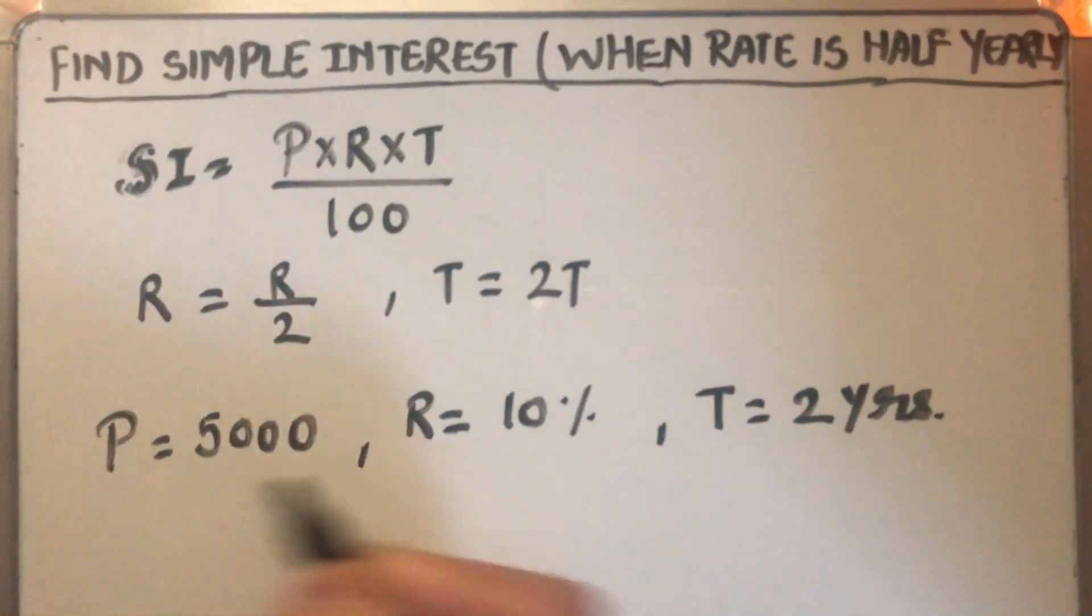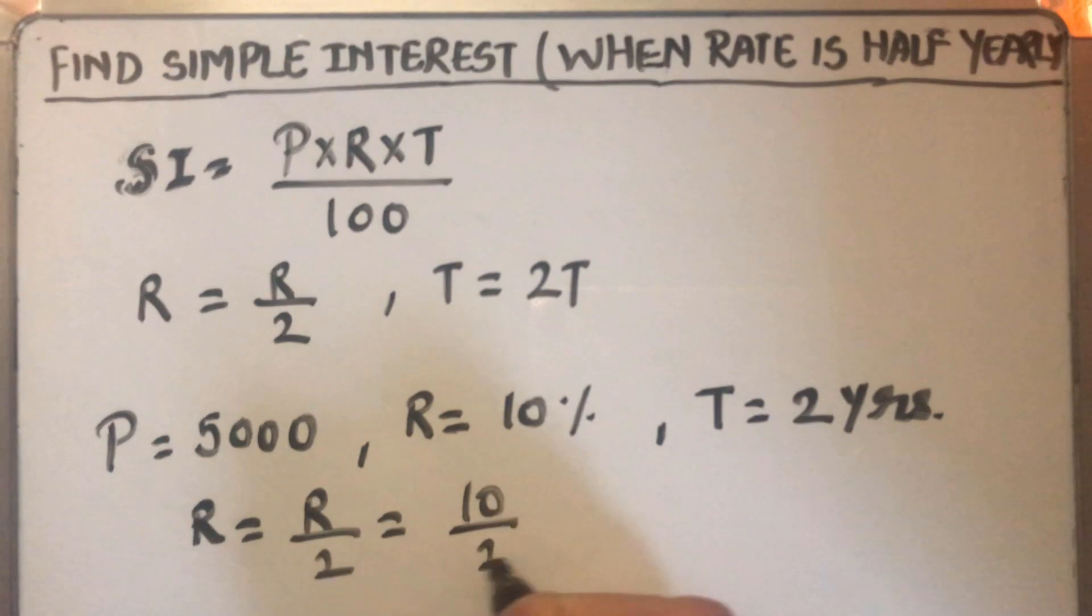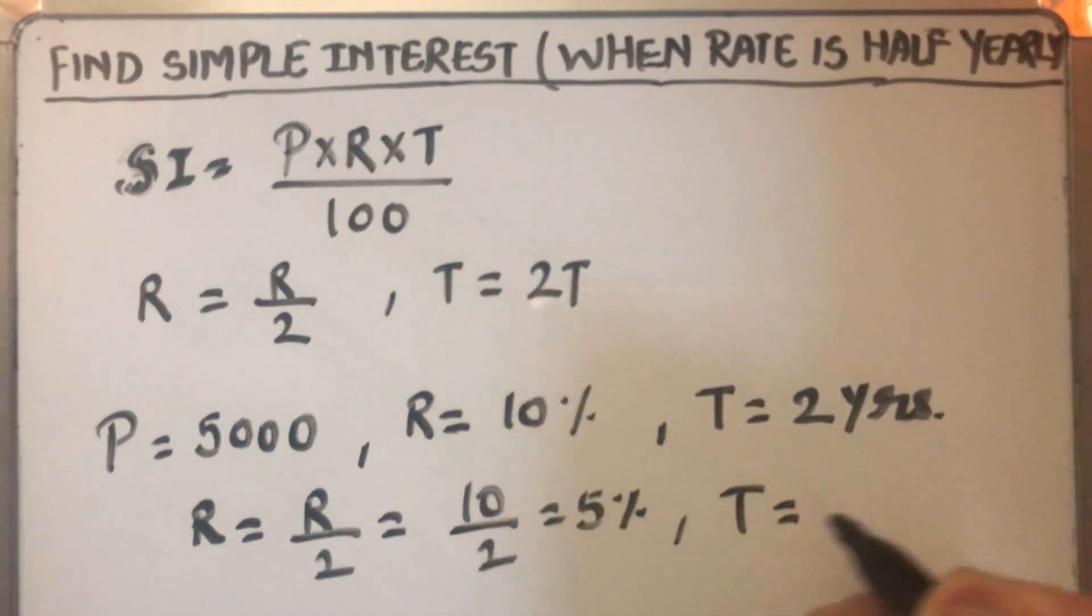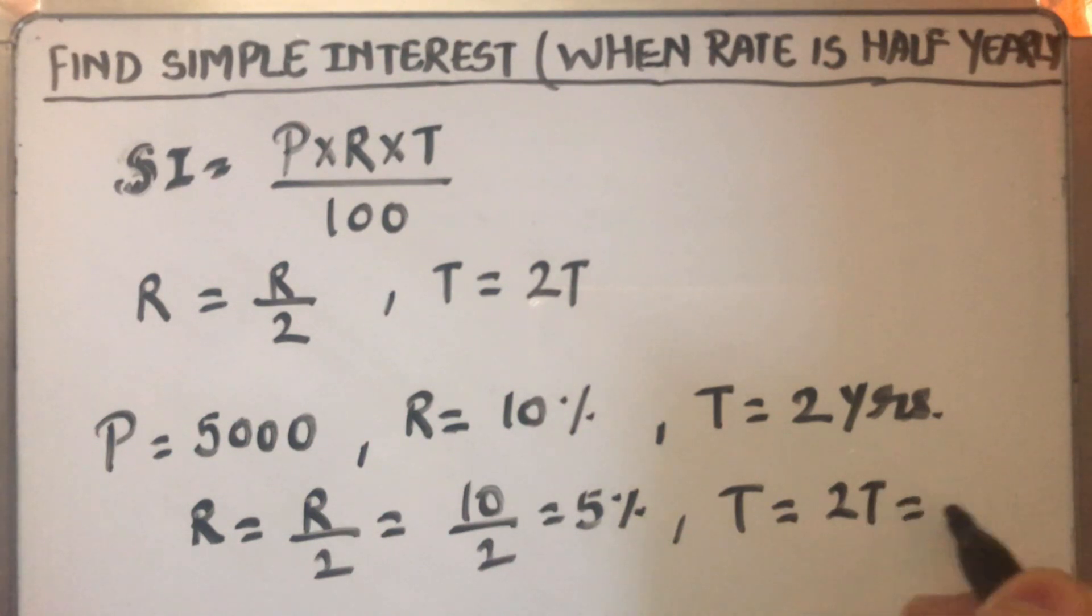So our P will be the same, R will become R over 2. So R over 2 will be 10 over 2 which is 5% and T will become 2T which is 2 times 2, 4 years. So T will be 4 years.